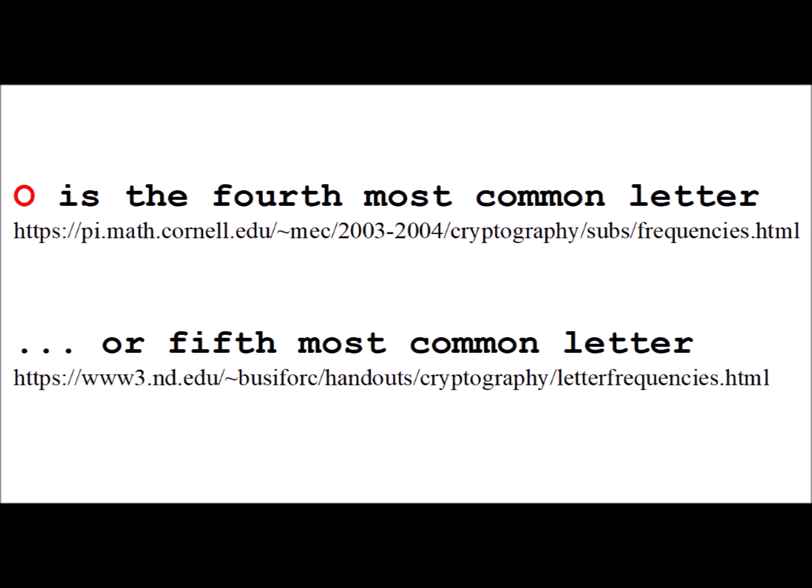Similarly, the use of the variant codon, so that we can get pyrrolysine, which has the one-letter code of O, was useful because O is the fourth most common letter, or the fifth most common letter, in the English language, and it's one of the five vowels.